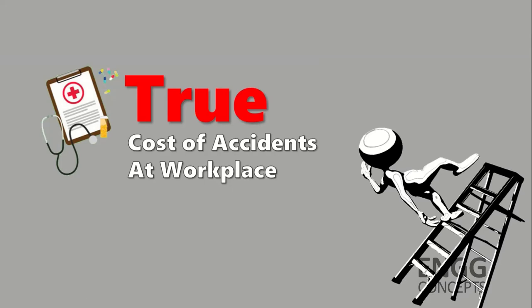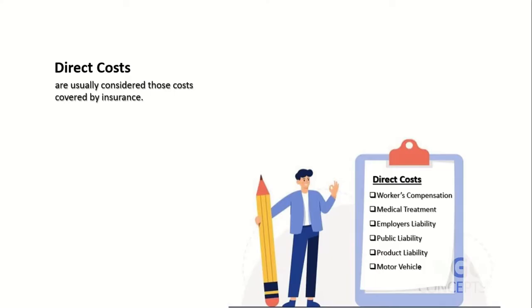The cost of accidents at work includes Direct Costs, Indirect Costs, and Unknown Costs. Let's start with Direct Costs, which are also known as Insured Costs.